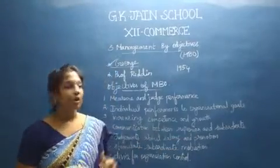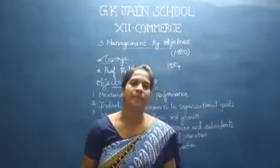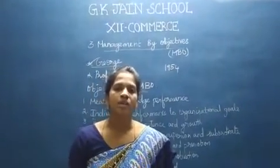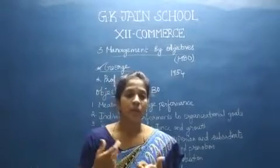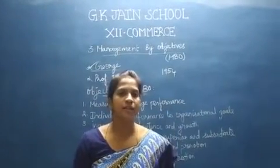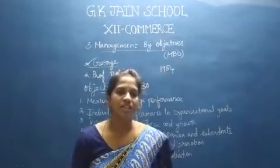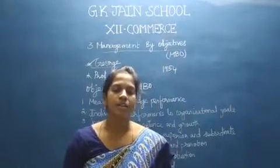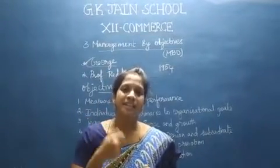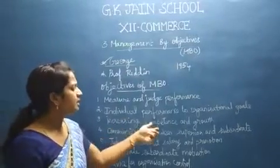The third objective is increasing competence and the growth of subordinates. Even if two persons have the same degree and same job, their capacity will differ. MBO will try to increase competence and the growth of subordinates. We have different levels of management — top level, middle level, and lower level. The subordinates possess certain skills, and those skills need to be developed. MBO is very helpful for increasing their capacity and growth.